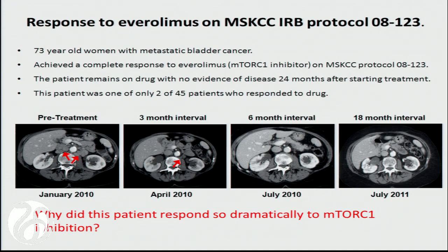So we asked: why did this patient respond so dramatically to this inhibitor of TORC1? We did some targeted sequencing — things like Sequenom. We even did a whole genome array CGH to try to figure out what was going on. All of that was unrevealing.